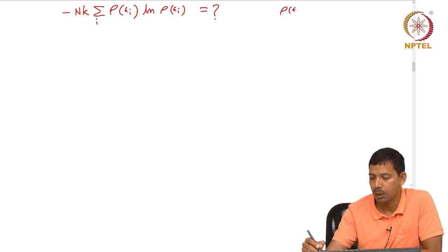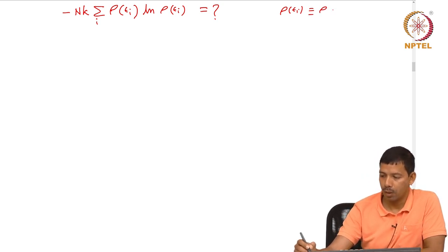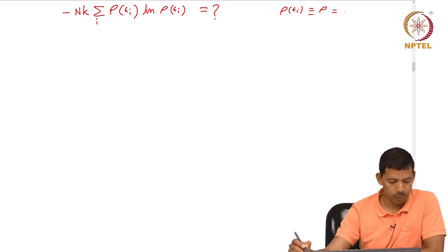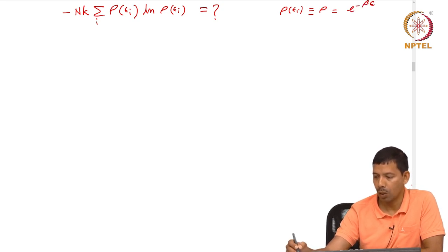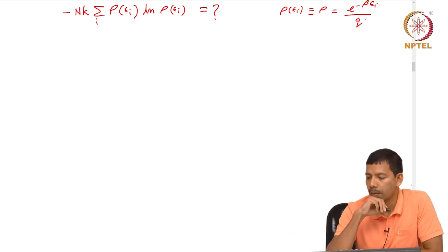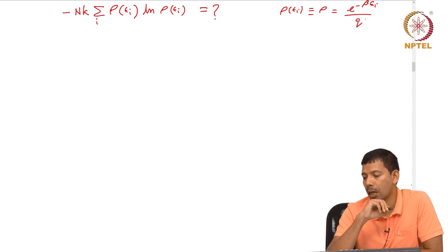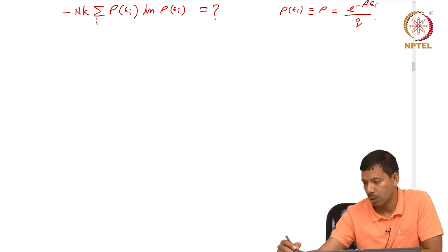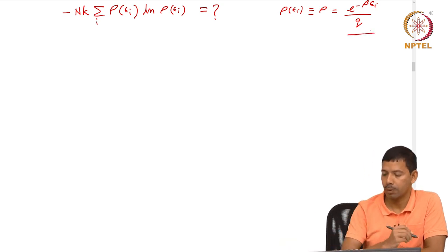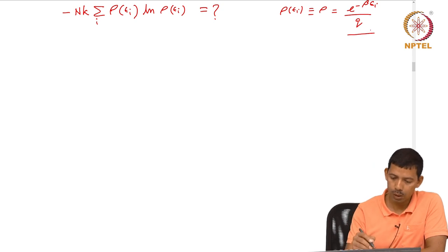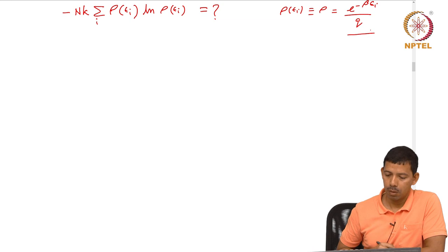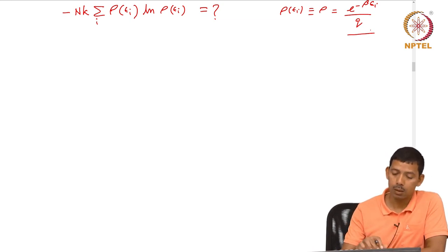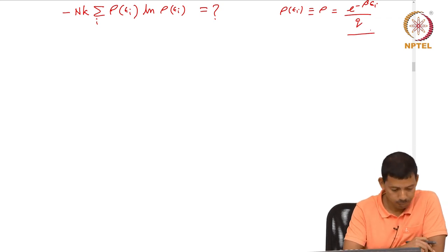ρ(εᵢ) is the probability defined as nᵢ/n, and therefore it is e^(-βεᵢ) divided by the partition function. So probability is nᵢ divided by n, the number of particles nᵢ divided by total number of particles, and from the Boltzmann distribution law nᵢ/n is e^(-βεᵢ) divided by the partition function q. So that is the probability. Now the question is: what thermodynamic quantity does this expression relate to? Let us find out.